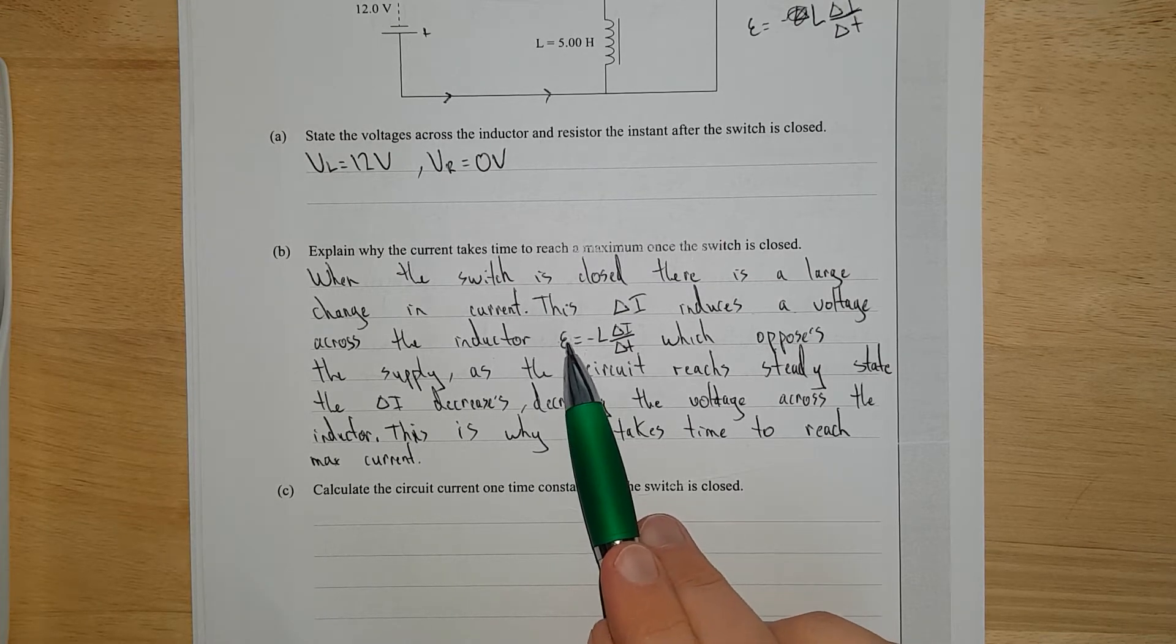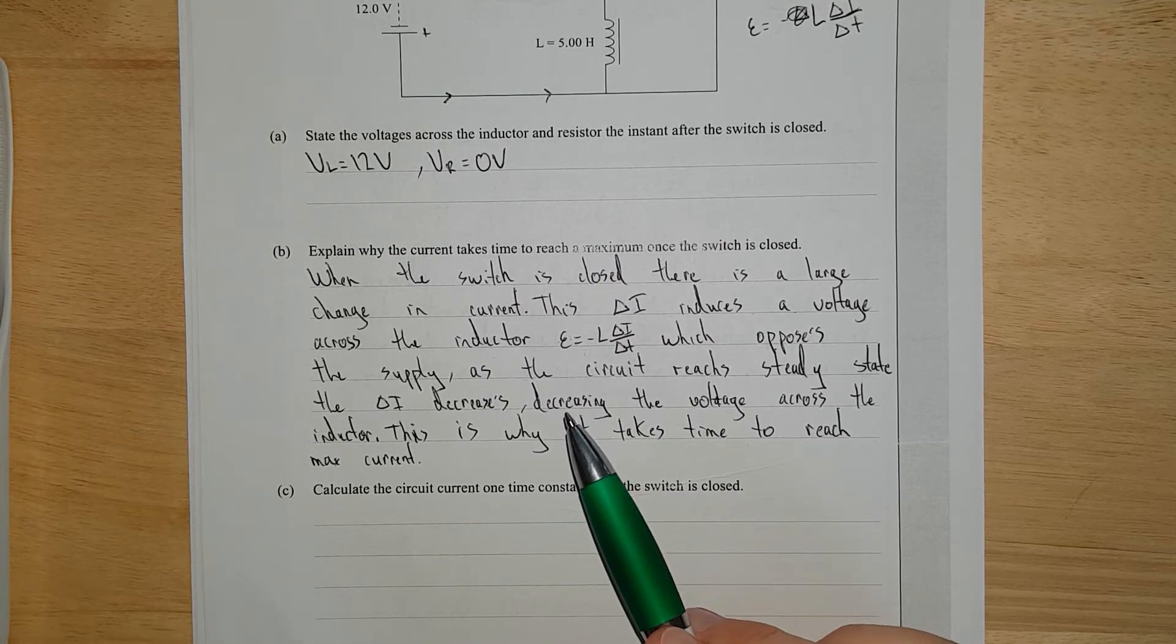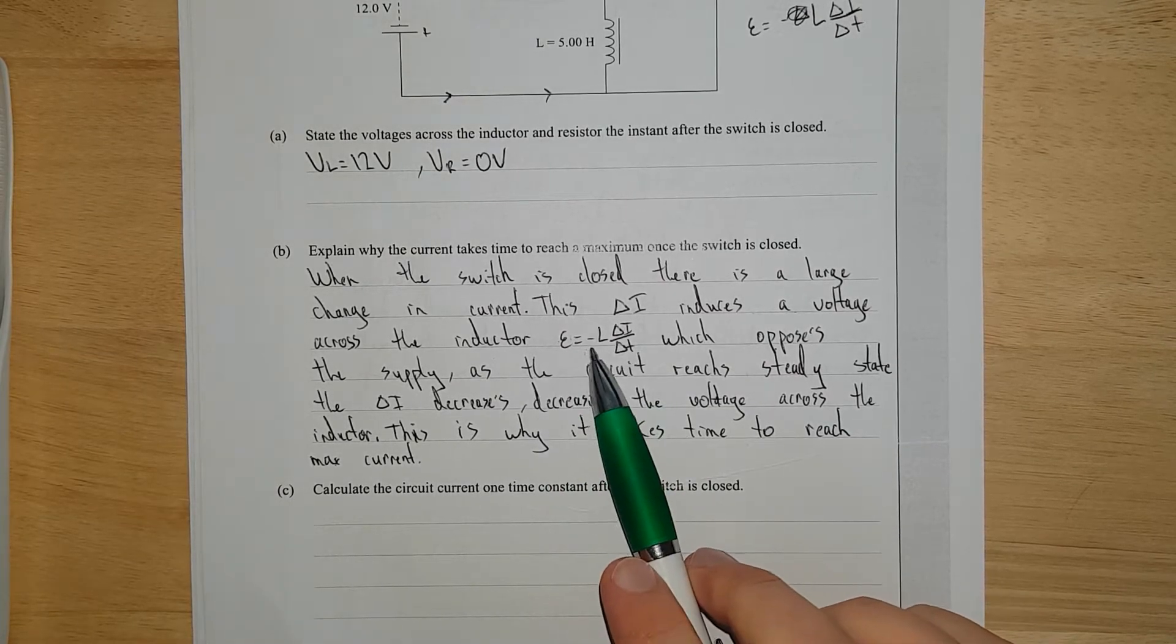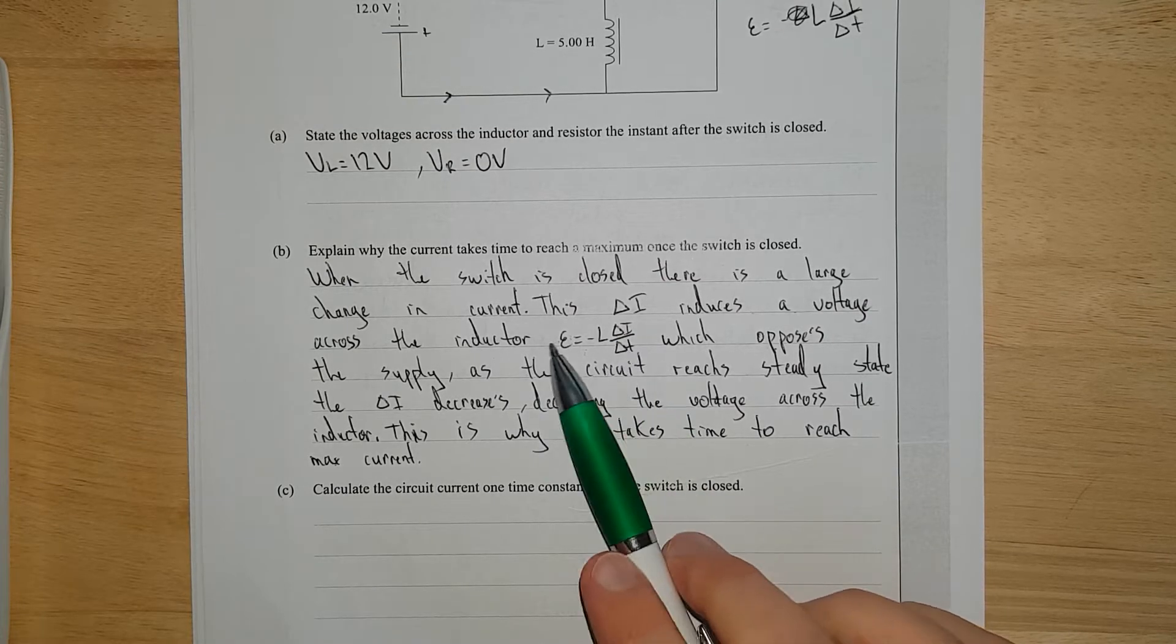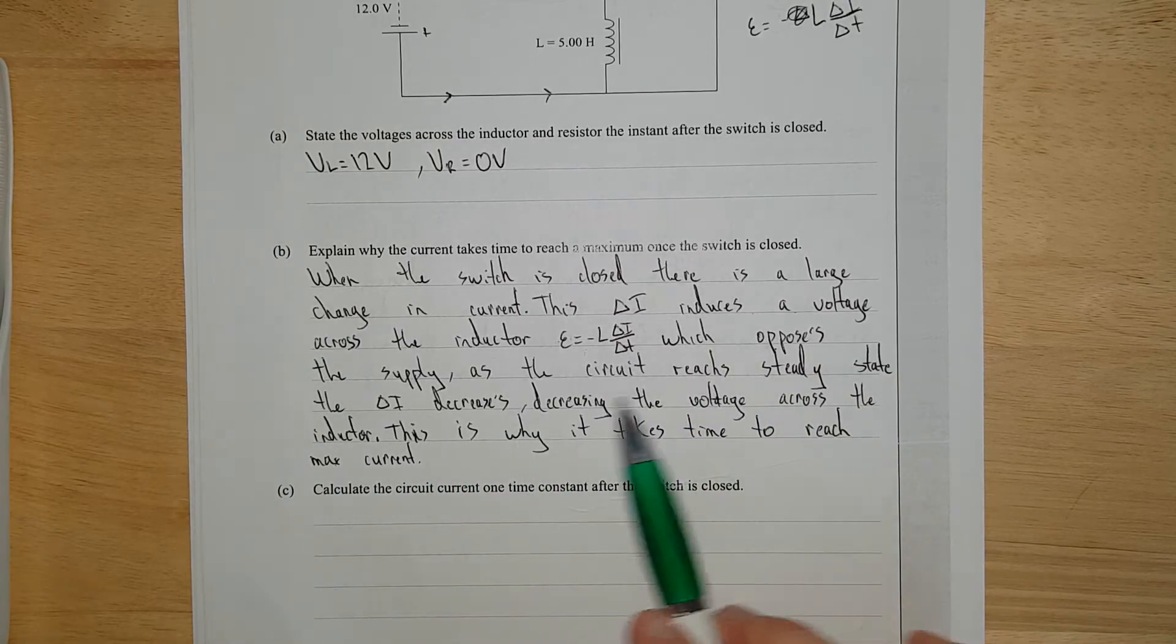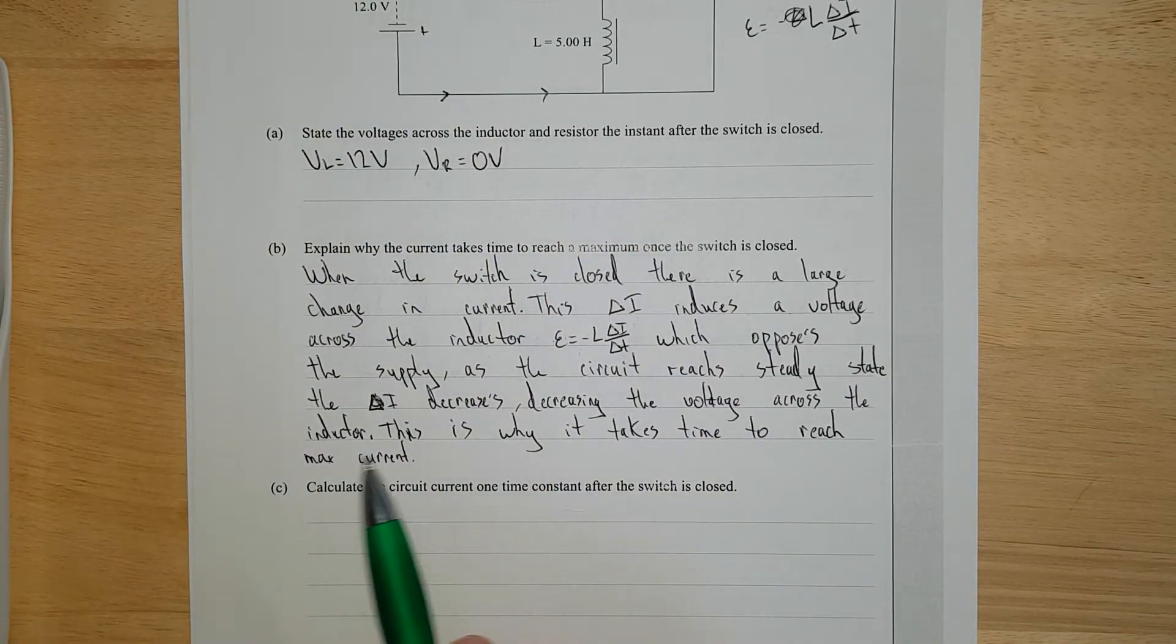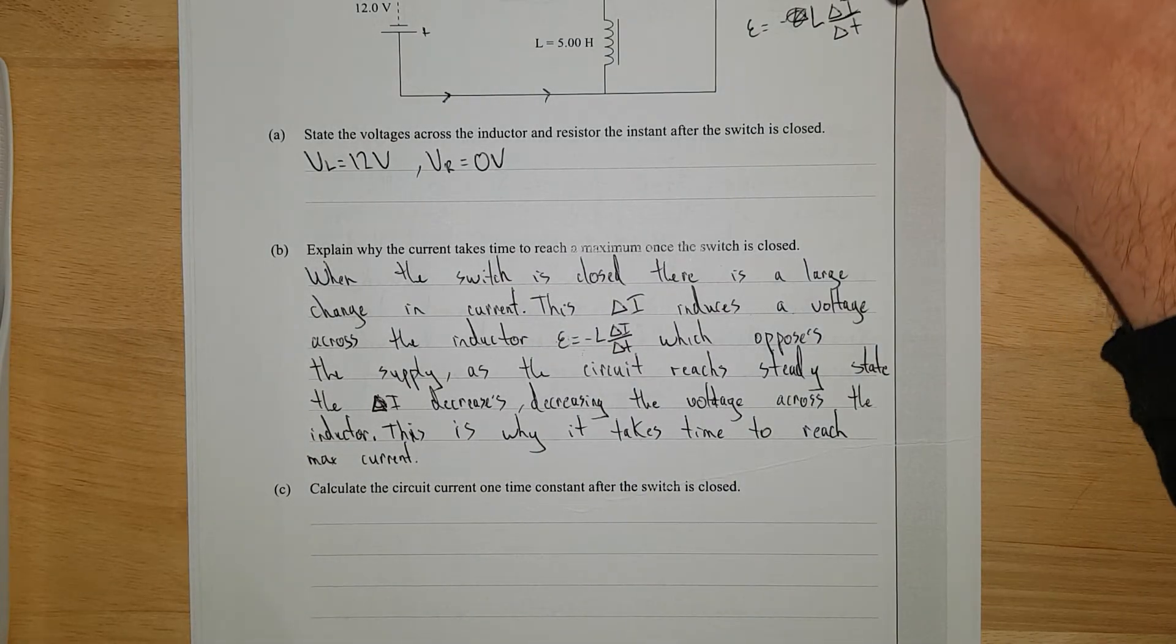And then I've got the formula. This E just stands for EMF, which is just fancy voltage. Well, it's not even fancy voltage. It's what they used to call voltage way back in the day. They used to call it the electromotive force before they realized it's not really a force. And it equals negative the inductance times the change in current over change in time, which opposes the supply. As the circuit reaches steady state, the change in current decreases, decreasing the voltage across the inductor. This is why it takes time to reach max current.